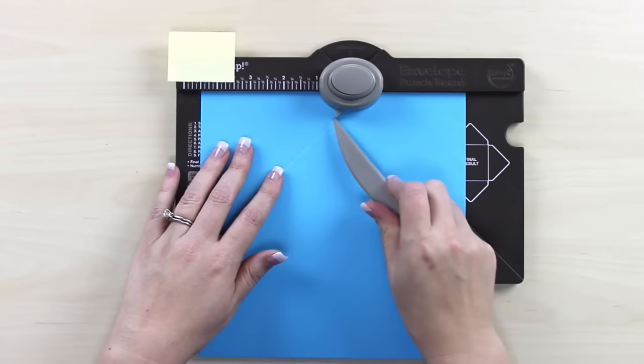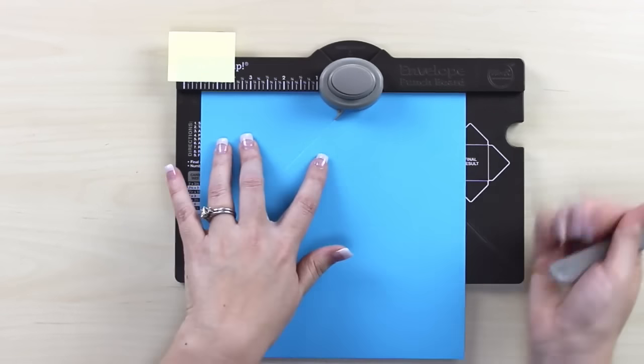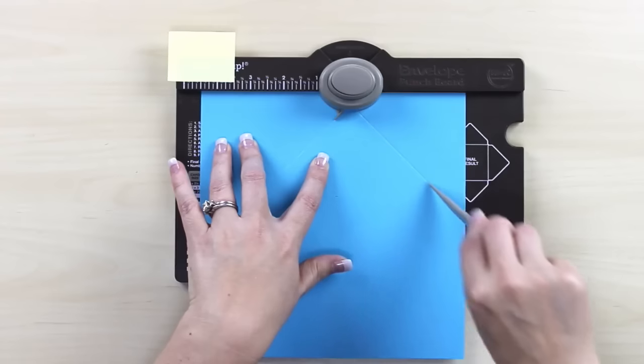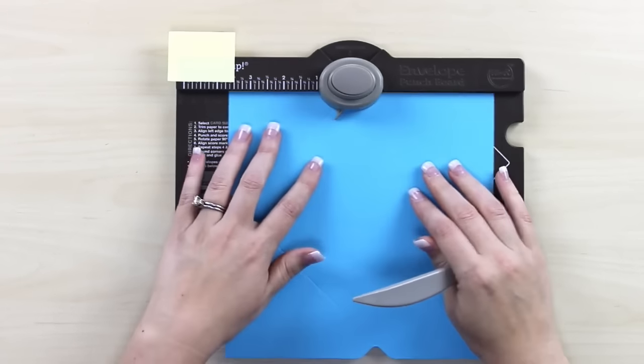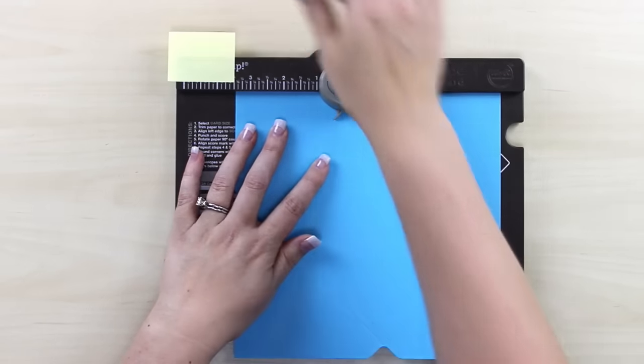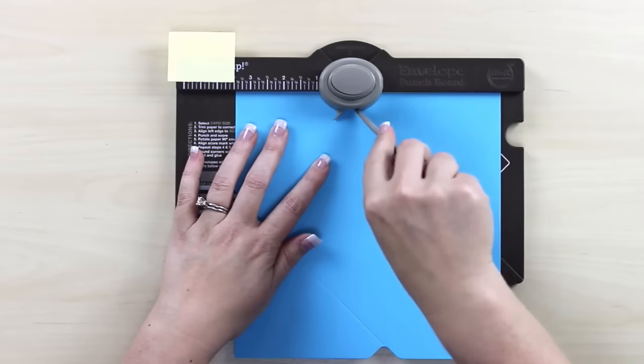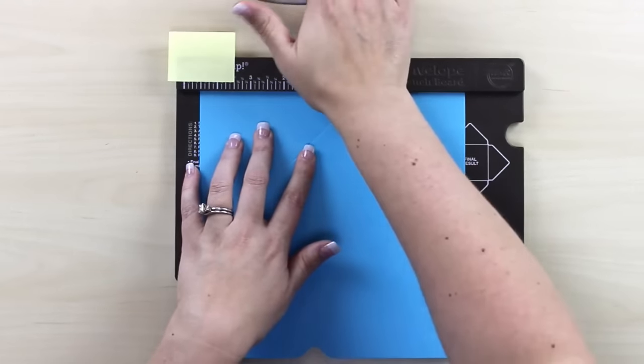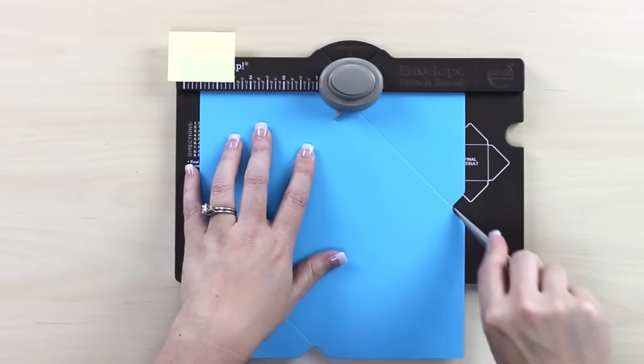Then we're going to take it and turn it and this little divot is going to go into this score line that we made and I'm going to punch. See, I didn't have to measure that time at all. I'm going to do the same thing, rotate it 90 degrees, line up this little guy with my score line. We're going to punch and we're going to score and I have a feeling you know what's coming next. Line it up, punch and score.